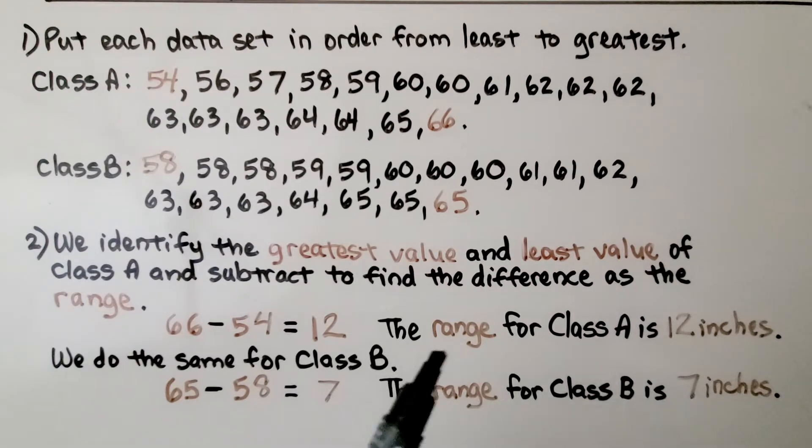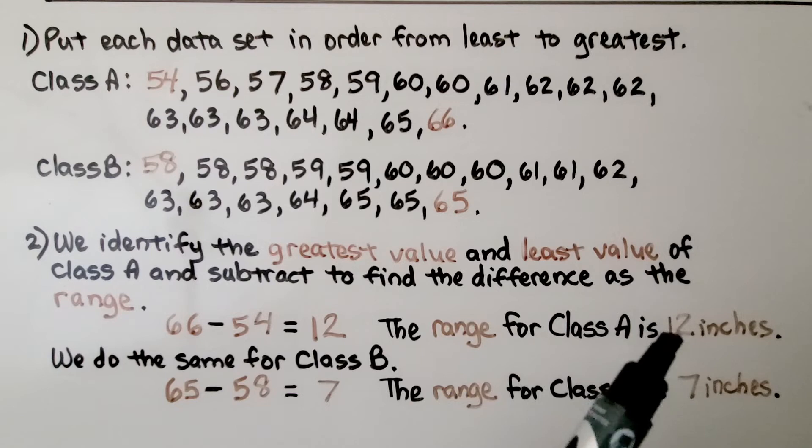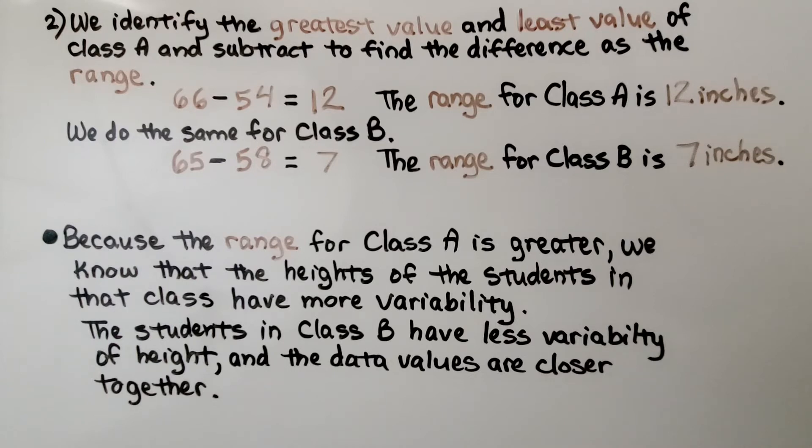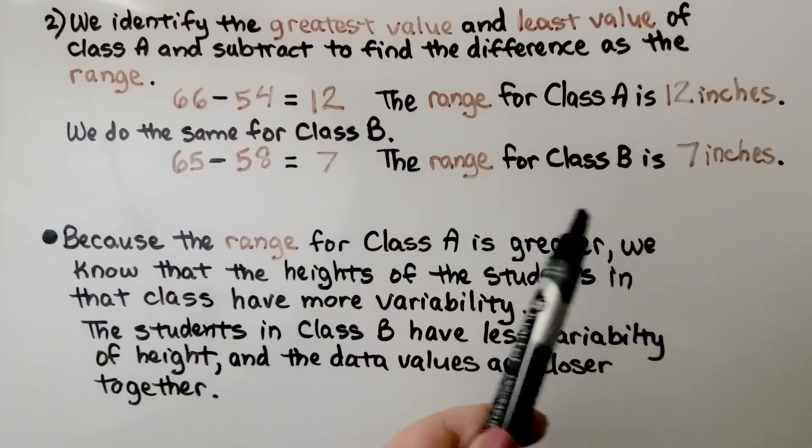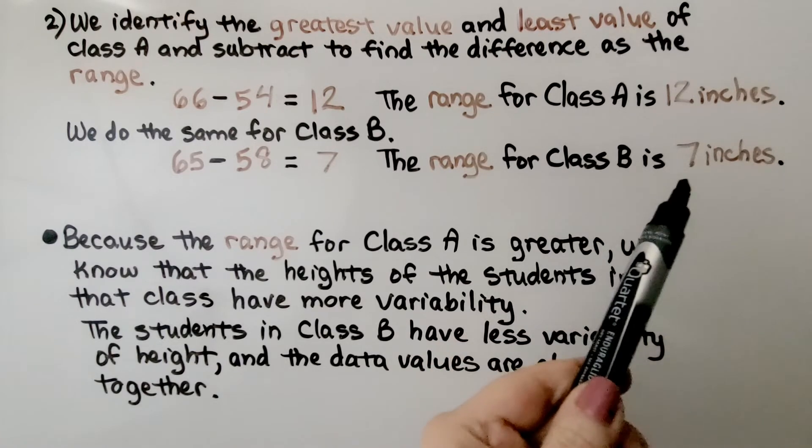Class A has a greater range, 12 inches, and class B has a lesser range, 7 inches. Because the range for class A is greater, we know that the heights of the students in that class have more variability. The students in class B have less variability of height, and the data values are closer together. The difference for class A of the shortest student to tallest student is 12 inches, and for class B, the shortest to tallest is 7 inches.